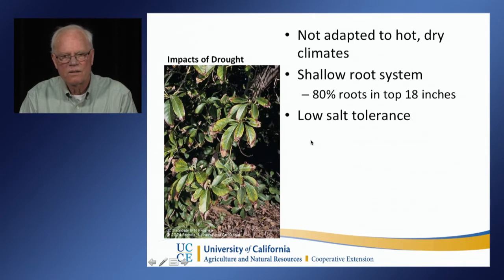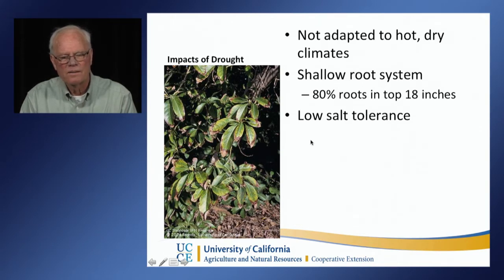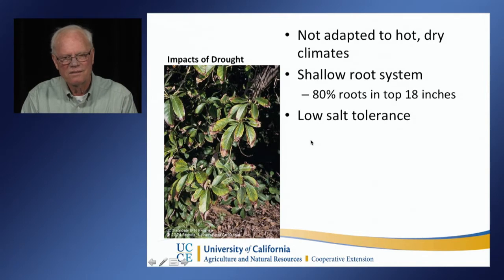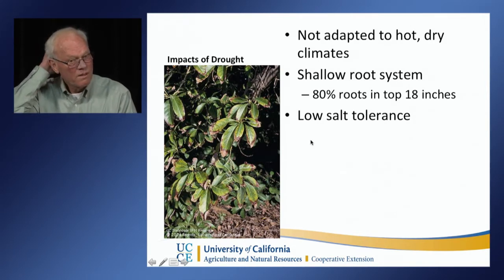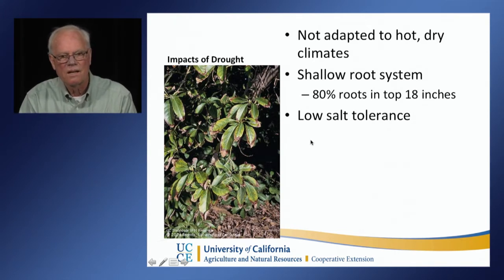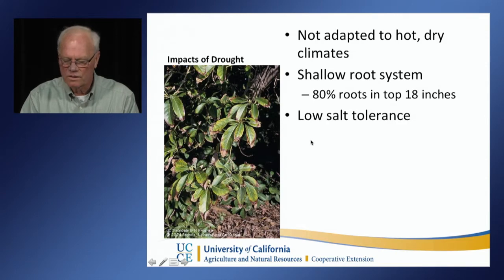In the case of avocado, it's shallow-rooted — 80% of the roots are in the top 18 inches — and it has a very low salt tolerance. Especially at the time of year of flowering, when we've had summer and fall irrigations, and in years with low winter rainfall, we've had winter irrigations. Salt accumulates in the root zone, and the avocado tree reflects that damage visibly.